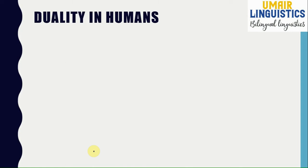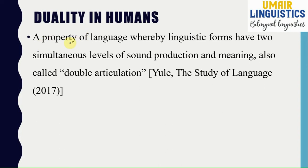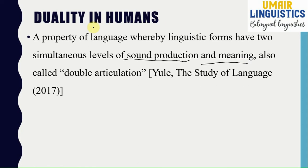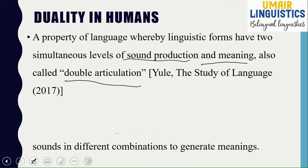First, we are going to discuss duality in human beings. Duality — just by the word, you may have understood that it means something like two, or at two levels. Duality is a property of language whereby linguistic forms have two simultaneous levels: sound production and meaning. These are the two levels which explain this concept, also known as double articulation. When we speak, we have a physical level where we produce individual sounds, and at another level, we combine these sounds in different combinations to generate meanings. We will study phonetics and phonology as well, which will help us understand these concepts more comprehensively.